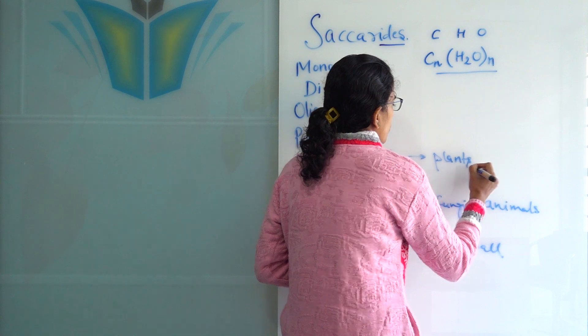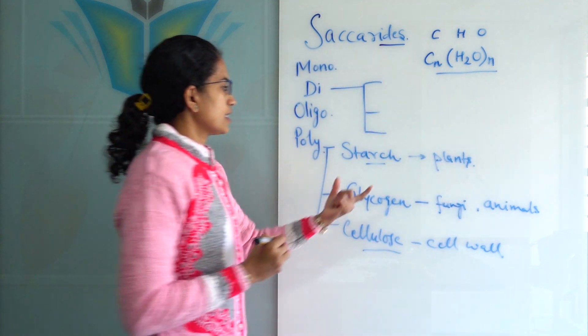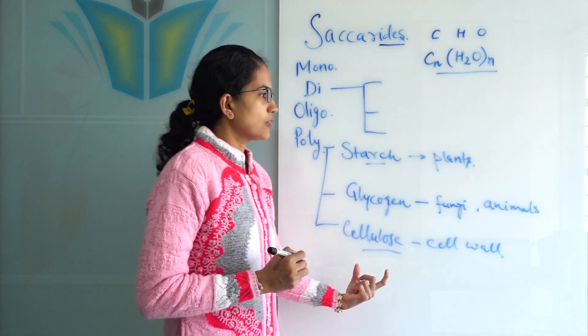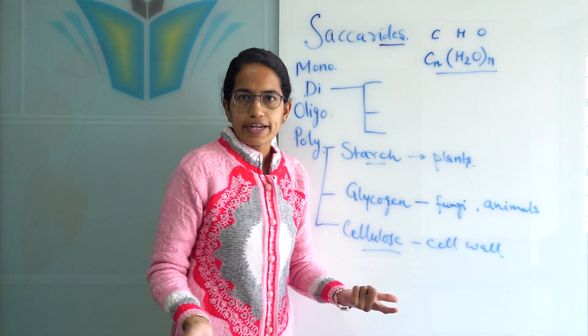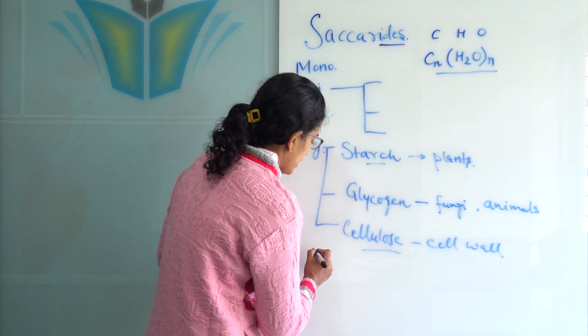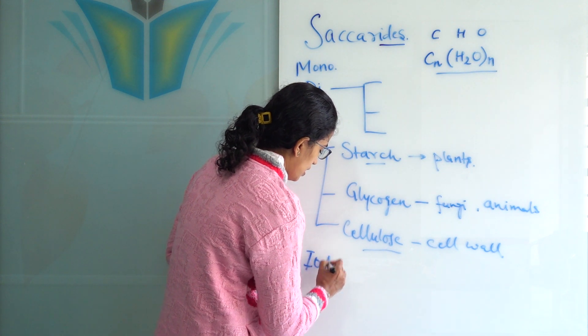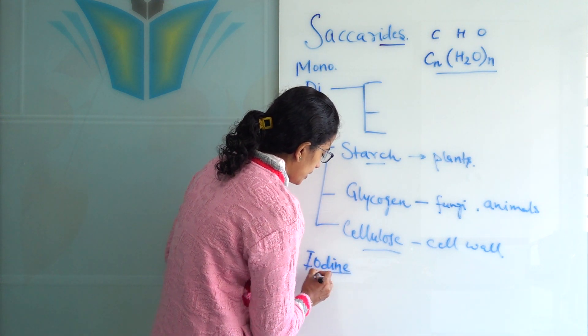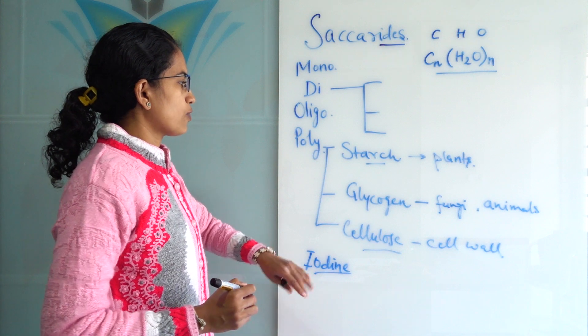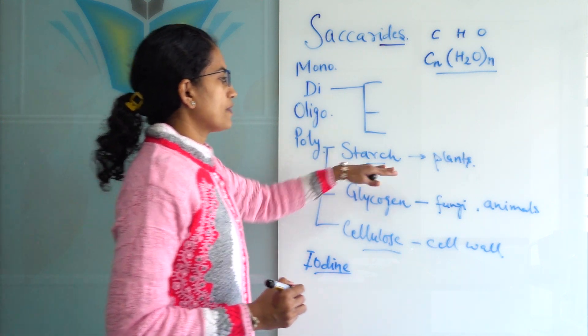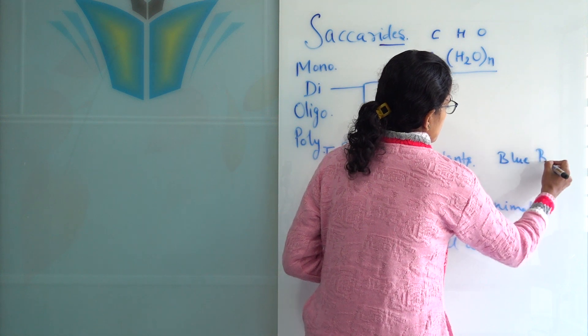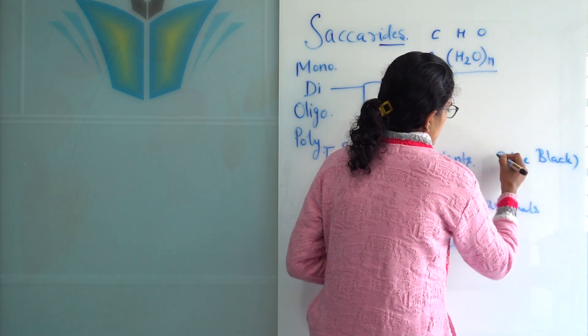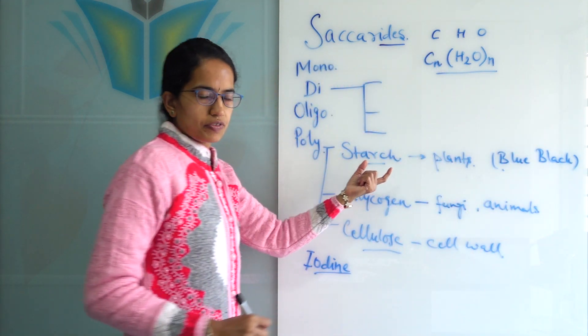How do we know whether a particular thing is a starch, glycogen or cellulose? So, this can be done with a simple carbohydrate test. A simple carbohydrate test that we take is with iodine. So, with iodine, what would be the reaction and what would be the colors? So, if it is a starch, it would turn blue-black. So, that would be an indicative of starch.